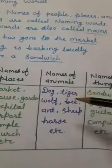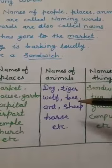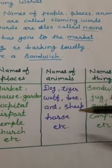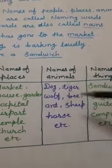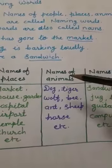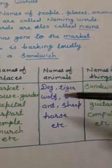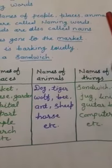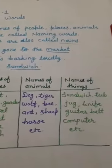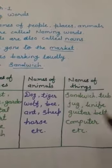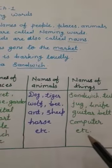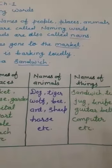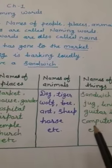Names of animals: dog, tiger, wolf, bee, ant, sheep, horse — these are examples of names of animals. And names of things: sandwich, tub, jug, knife, guitar, belt, computer — these are the names of things.